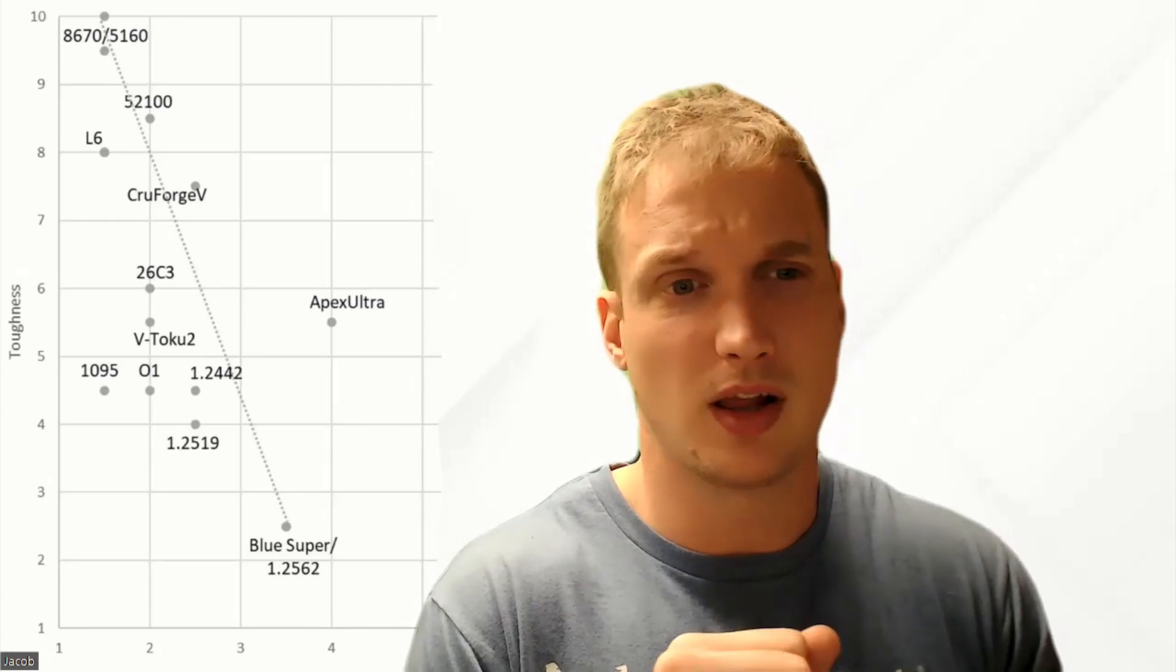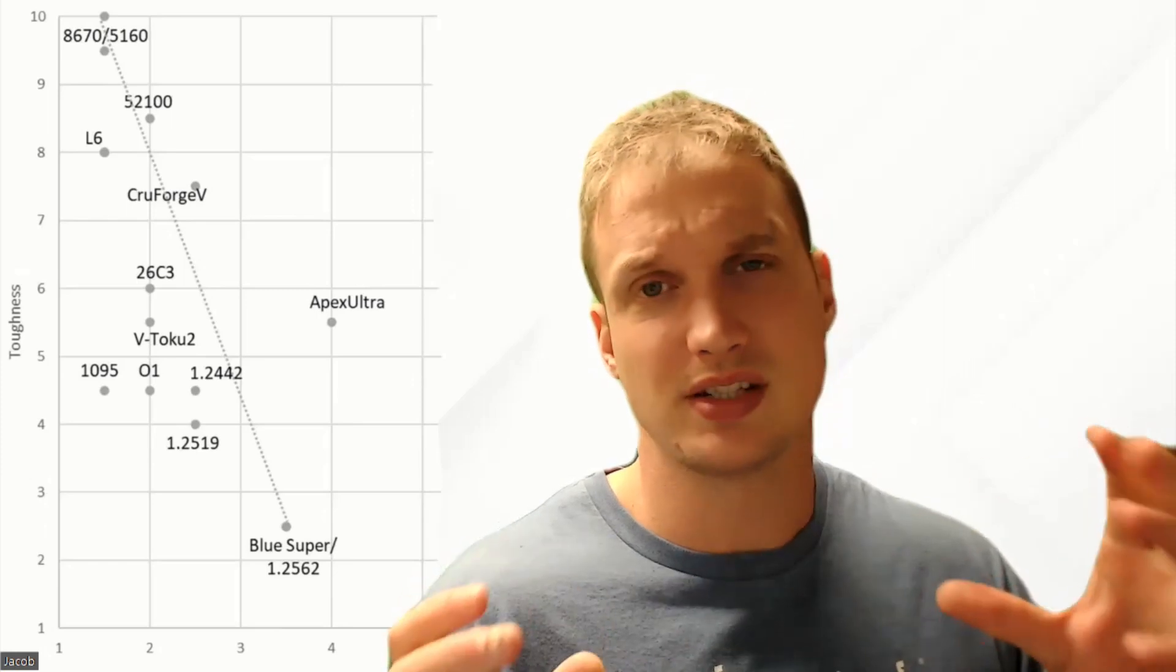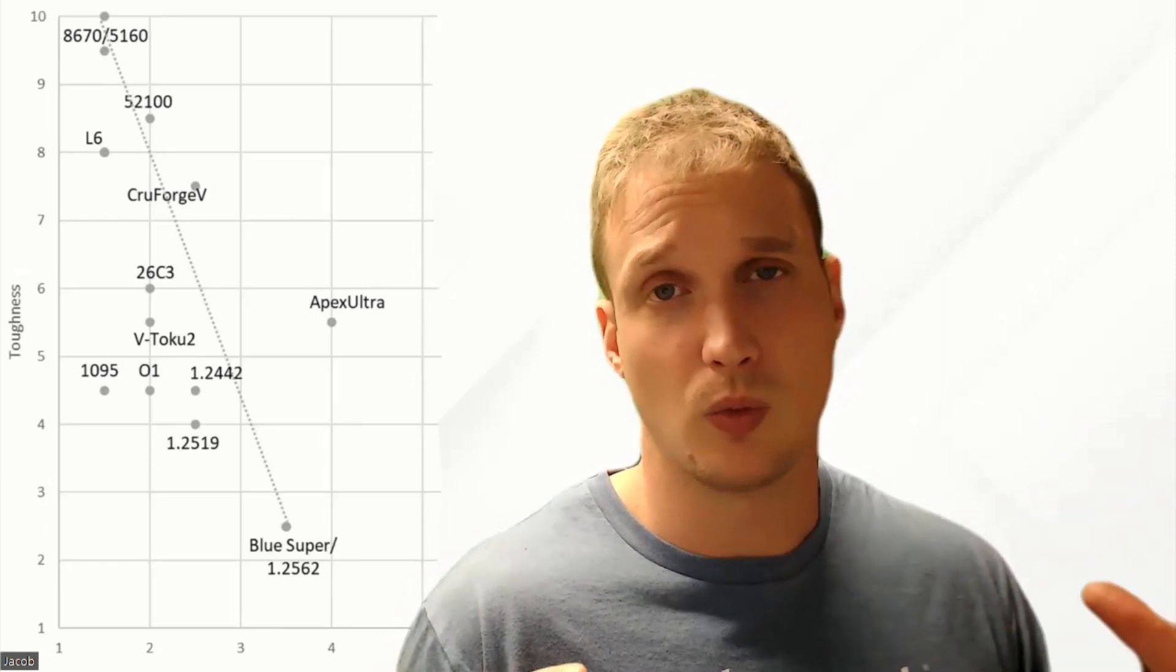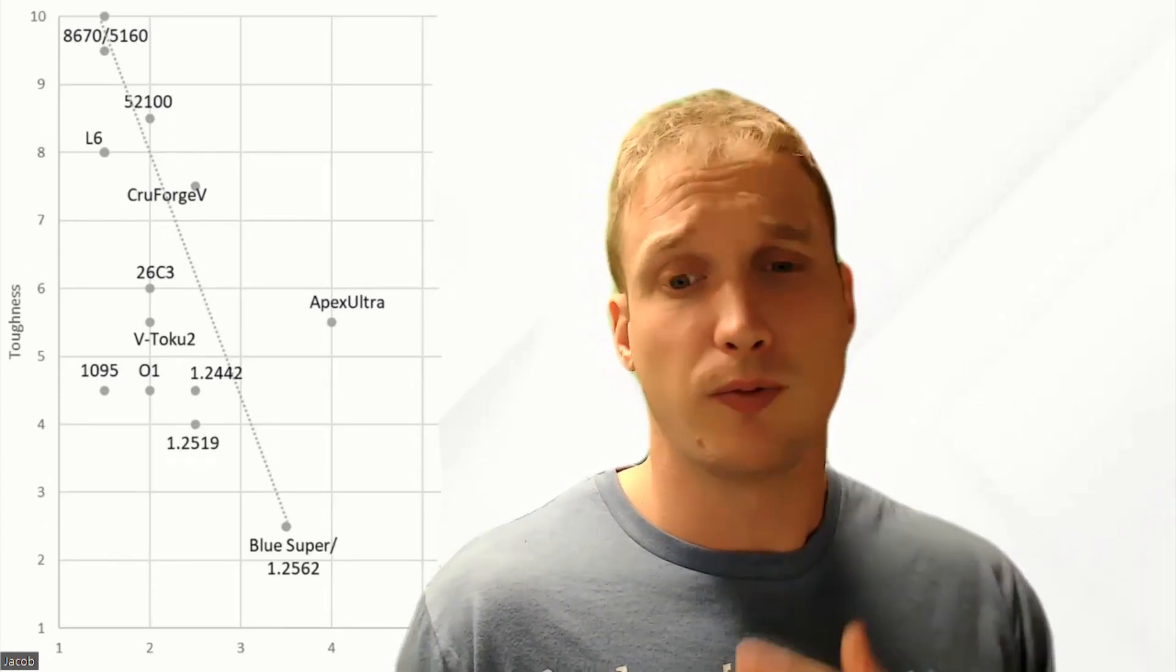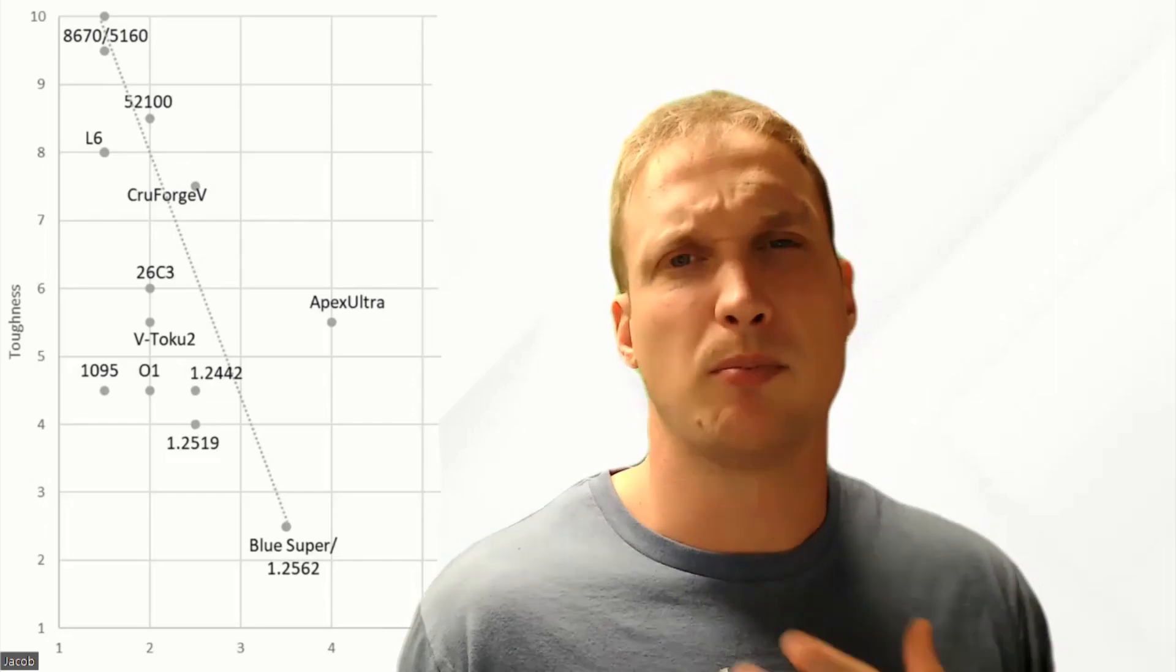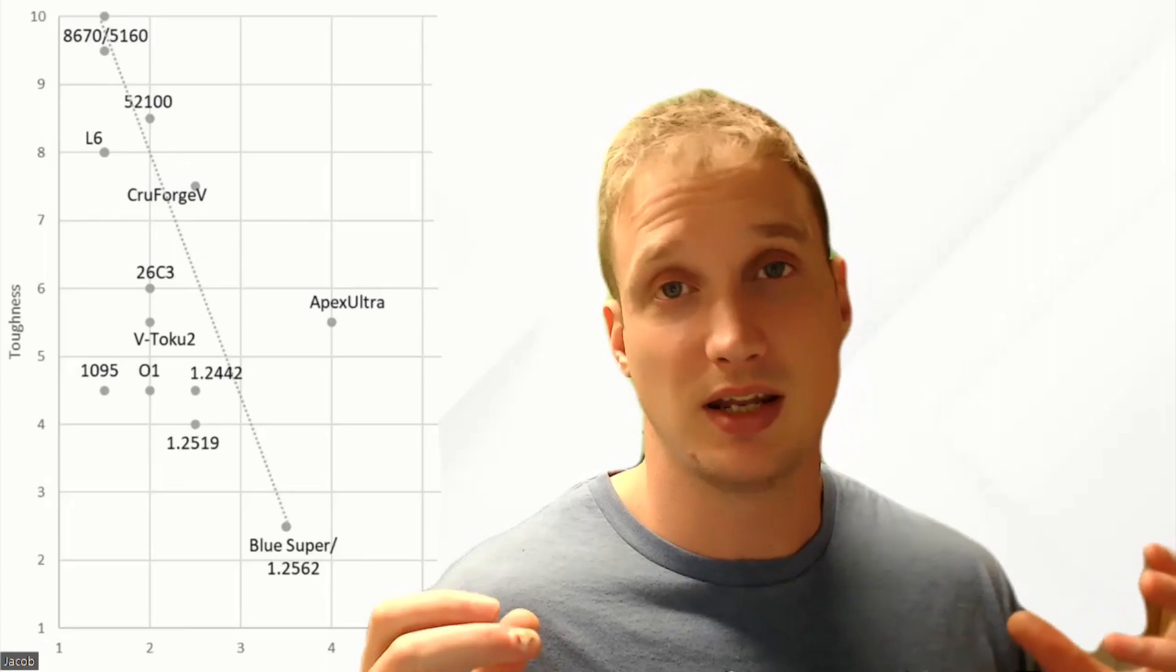52100, an amazing, amazing steel balance for edge holding, super fine grain stuff and toughness. L6, crazy tough. Again, L6, right on par with edge holding is 1095, but just under double the toughness. Apex Ultra is really cool on this list. I hope that it does become more available because we have better toughness than 1095 and better toughness than a lot of steels, but good edge holding still. I think it would be cool. Maybe I will do this myself at some point, put all of this data for all of the different types of steels onto one chart.